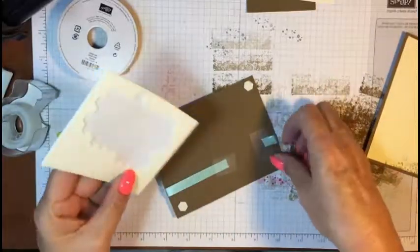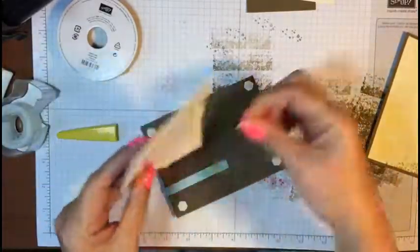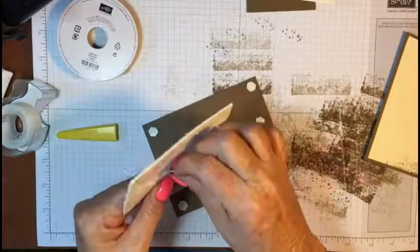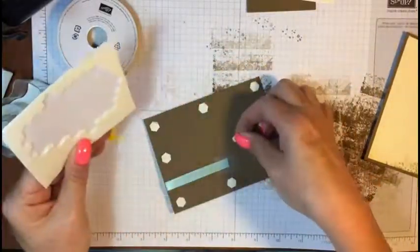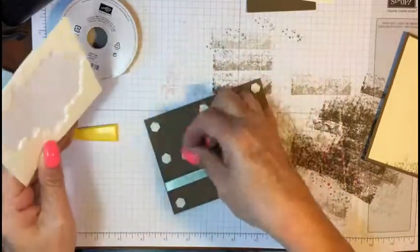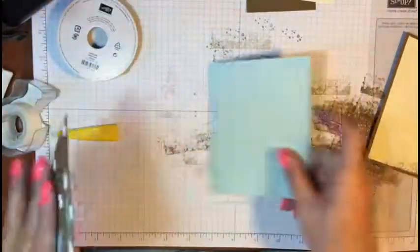And I have a tendency to overdo it on dimensionals because I don't want the card sagging in the middle. So put however many or however few that you feel like is good. Okay, let's bring our card back here.